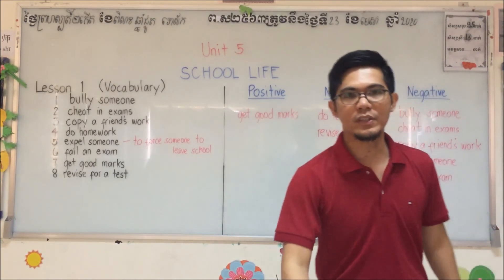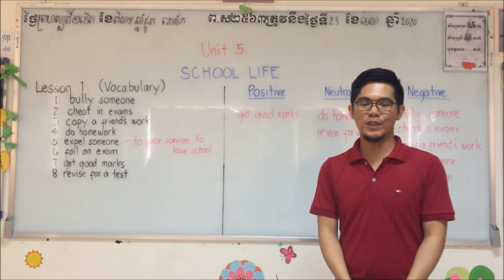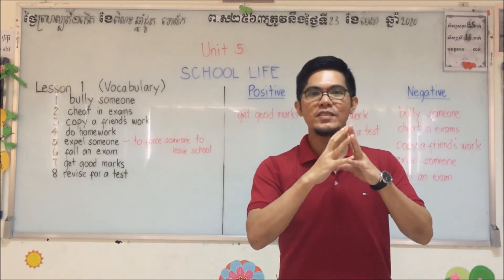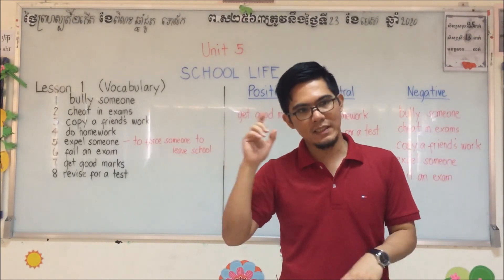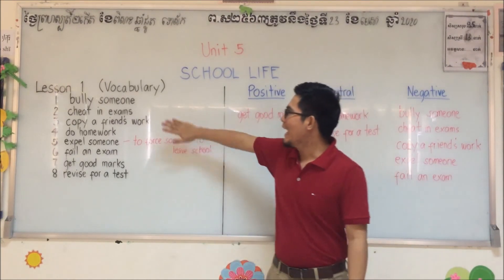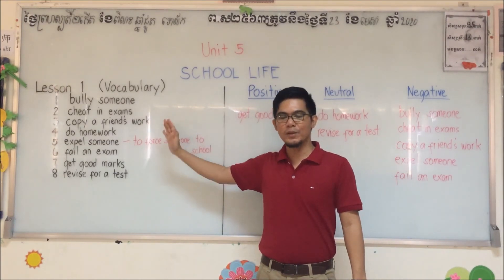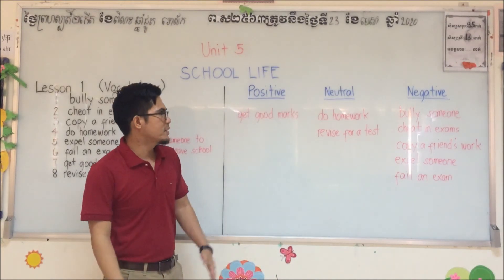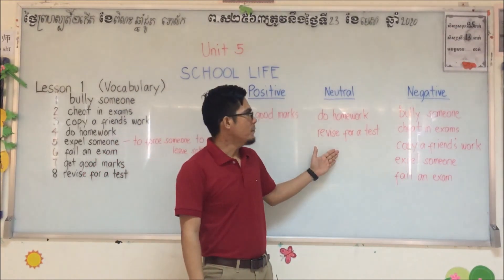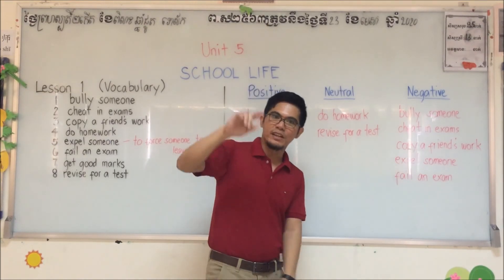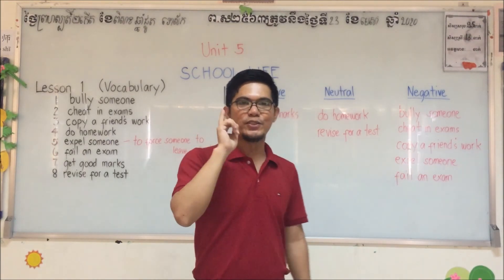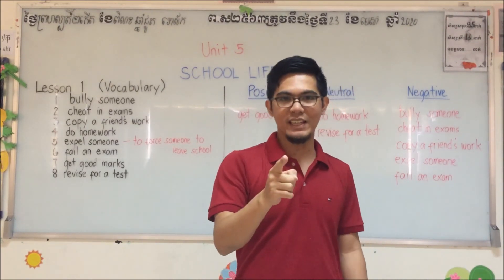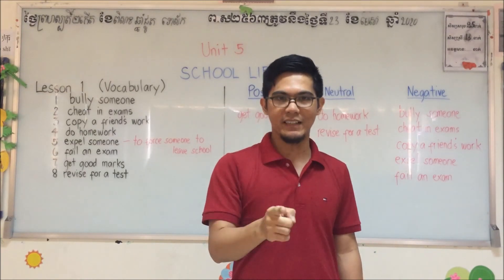I hope you learned something from today's lesson. Remember, we are now on Unit 5 — it's all about school life. This is our first lesson. We've learned eight vocabularies — school life verbs — and we identified these eight school life verbs as positive, neutral, or negative. For our next lesson, you should do your part. Wait for the next video. Thank you for watching, and hope you had a great day. Bye!